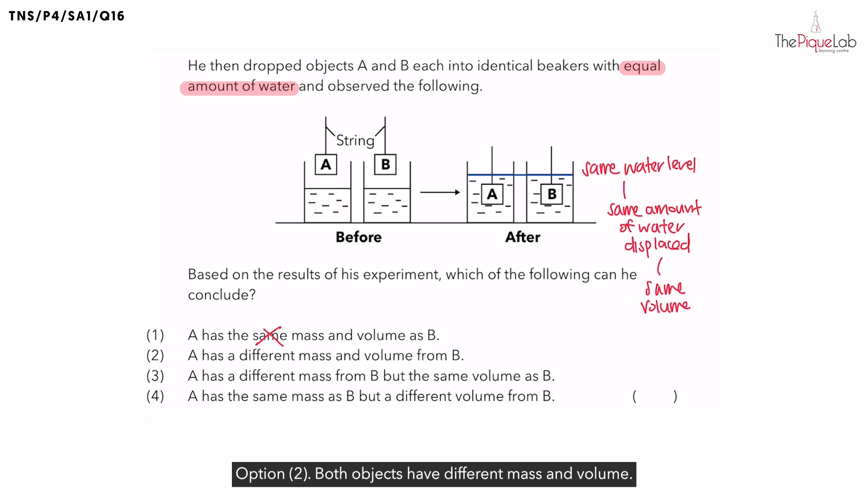Option 2. Both objects have different mass and volume. Is it true that both objects have a different volume? No. From this experiment earlier on, we mentioned that both objects have the same volume. Therefore, option 2 is also incorrect.